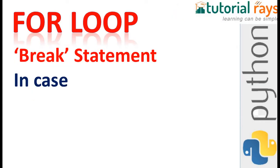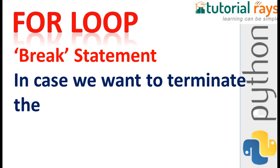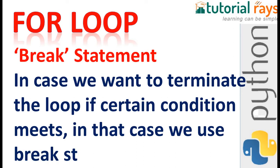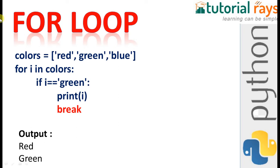Now we will see the break statement in for loop. The break statement is used when we want to terminate the loop if a certain condition is met. Here we have colors: red, green, blue — which we've already seen. So for i in colors, if i equals green, then print and break.